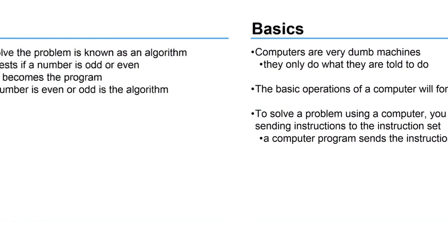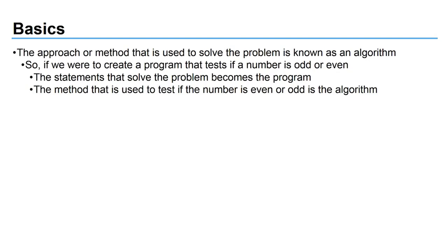The approach or method used to solve the problem is known as an algorithm. For those who understand math, an algorithm is just how you're solving a problem. For example, if you create a program that tests whether or not a user enters an odd or even number, what would be described as the algorithm itself is the test of whether or not the number is even or odd. The statements that solve the problem in its entirety become the program.